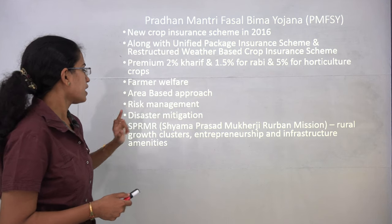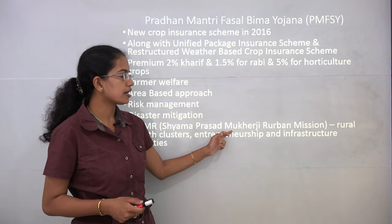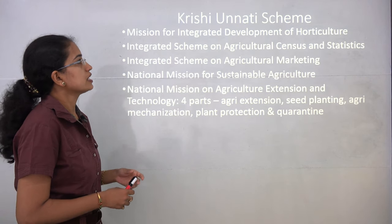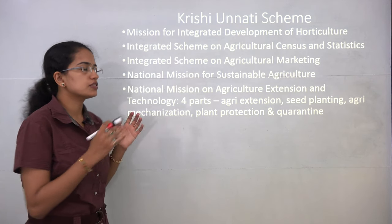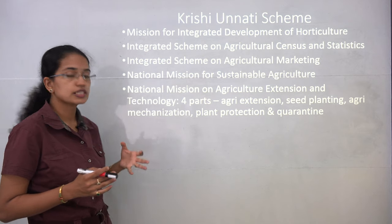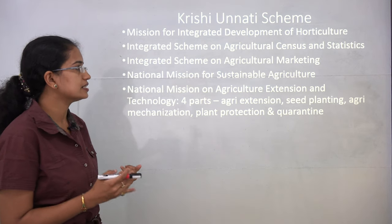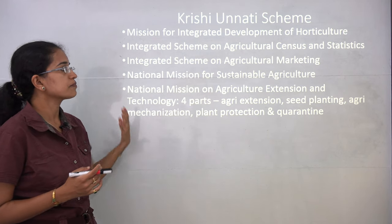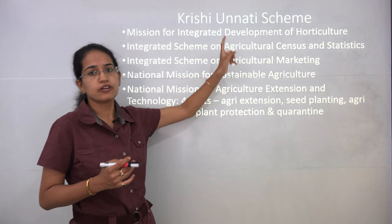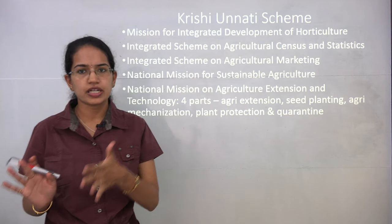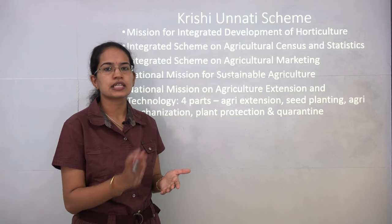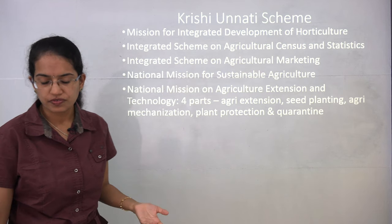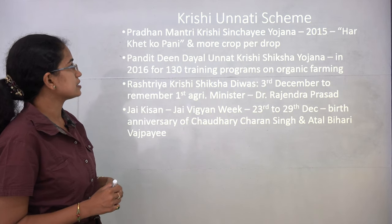Shyama Prasad Mukherji Rural Urban Mission talks about developing rural clusters for entrepreneurship and skill development. The Krishi Unnati scheme integrates various smaller schemes in rural areas including horticulture development, agriculture marketing, sustainable agriculture, extension of agricultural services, and the agricultural census. While the population census is conducted every 10 years, the agriculture census takes place every 5 years.